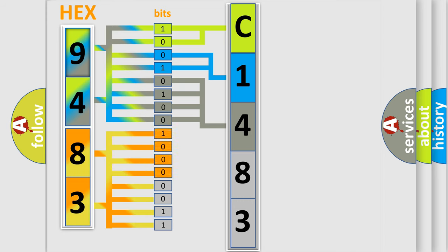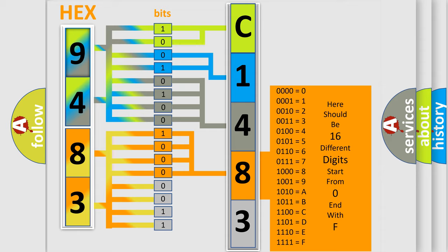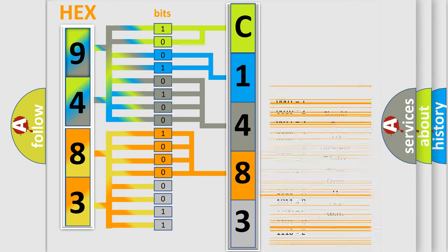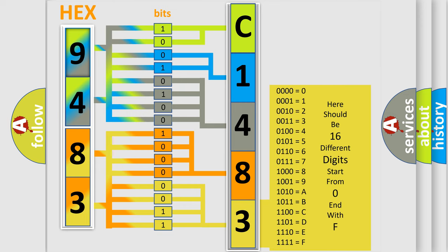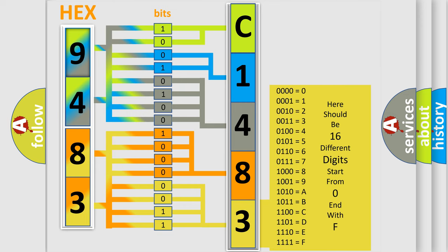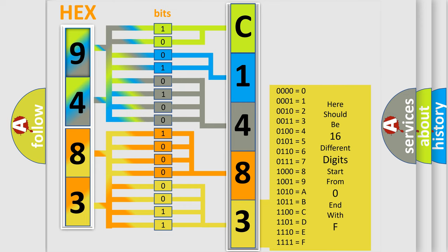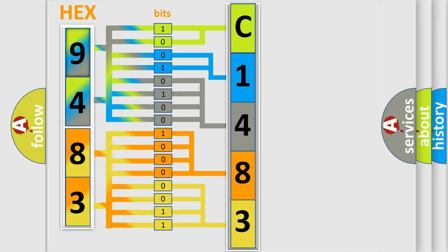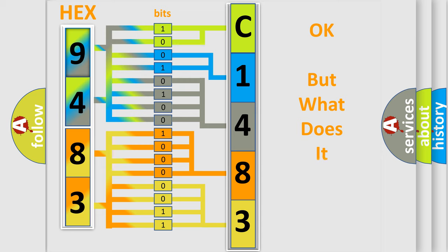The second byte is composed of a combination of eight bits. The first four bits determine the fourth character of the code, and the combination of the last four bits defines the fifth character. A single byte conceals 256 possible combinations.